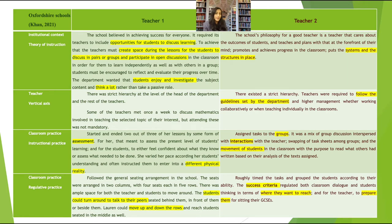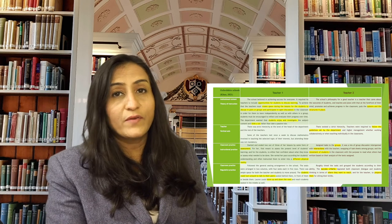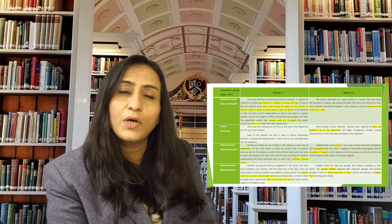School one wanted students to enjoy and investigate the subject content and think a lot rather than take a passive role. School two's philosophy was that teachers should put systems and structures in place. As a result of these two theories of instruction, instructional practice and regulative practice for both teachers was different. For school one, the teacher focused more on assessment — she started and ended her lessons with a multiple choice quiz to help her understand where students were in their learning and help students reflect on their progress. To help students enjoy and investigate the subject, she created tasks that would allow students to enter into a different physical reality.